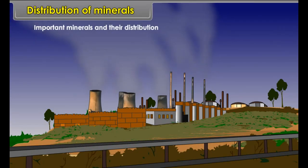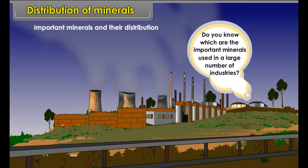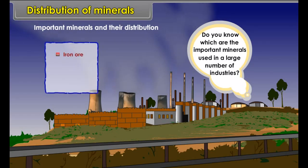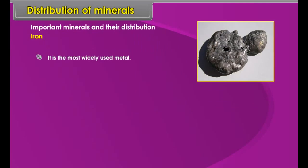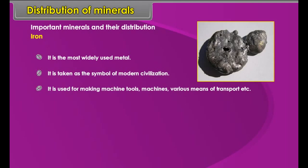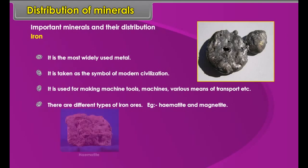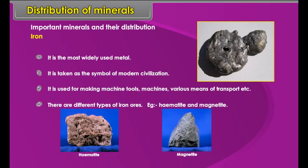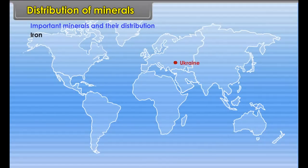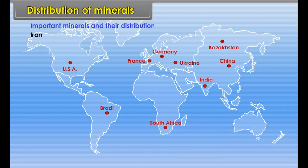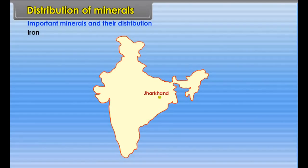Important minerals and their distribution. Do you know which are the important minerals used in a large number of industries? Iron ore, copper and bauxite are used in a large number of industries. Iron: it is the most widely used metal. It is taken as the symbol of modern civilization. It is used for making machine tools, machines, various means of transport, etc. There are different types of iron ores. Example: hematite and magnetite. Location, world: Ukraine, Kazakhstan, USA, China, India, Brazil, France, Germany, South Africa, etc. In India: Jharkhand, Orissa, Chhattisgarh and Madhya Pradesh.